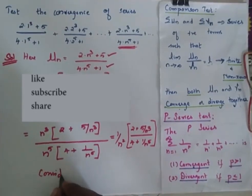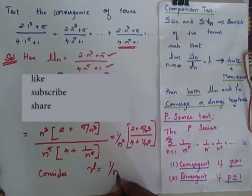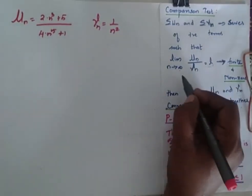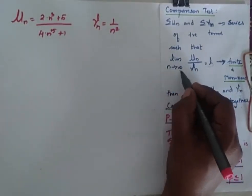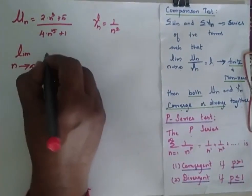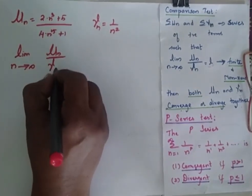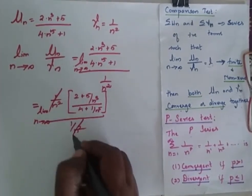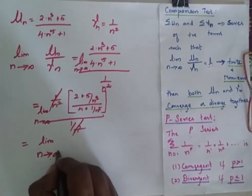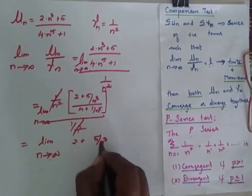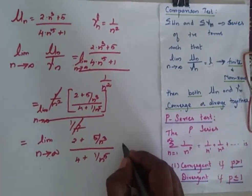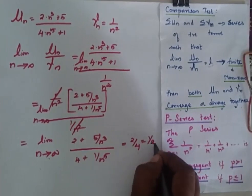Consider vn as 1 by n squared. We have to find the limit as n tends to infinity of un by vn. Now we compute this limit — after cancellation, I will have the limit as n tends to infinity of (2 plus 5 by n cubed) by (4 plus 1 by n power 5).